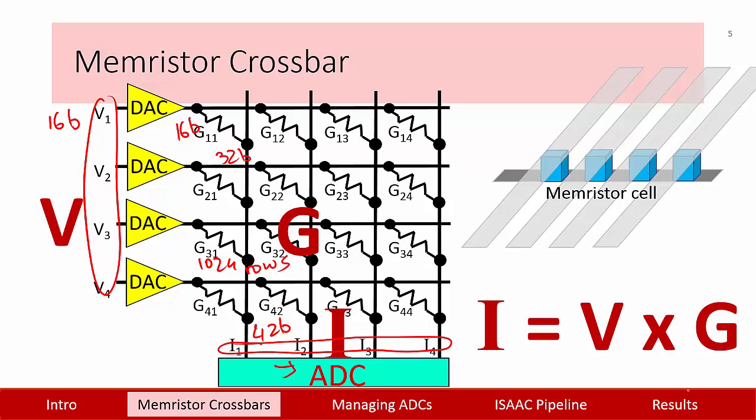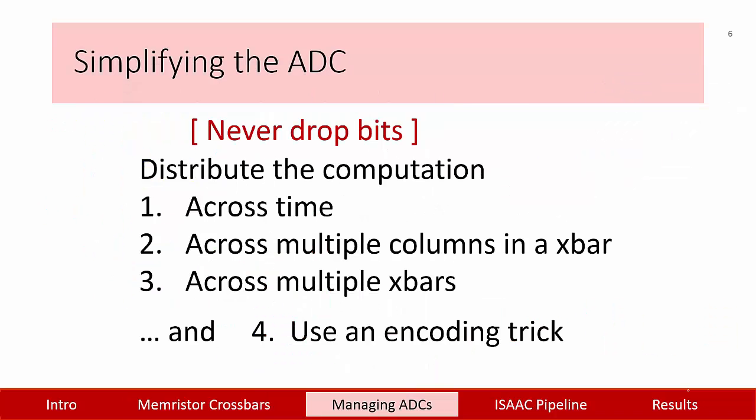Arbitrarily dropping these bits with a low-resolution ADC can introduce error that accumulates across a many-layer deep network. Therefore, the ISAC architecture is designed to never drop bits and faithfully reproduce the results of a software implementation of 16-bit fixed-point arithmetic. The ADC overheads are kept in check by distributing a single computation across time, across multiple columns in a crossbar, and across multiple crossbars. We also use an encoding trick to further bring down ADC resolution.